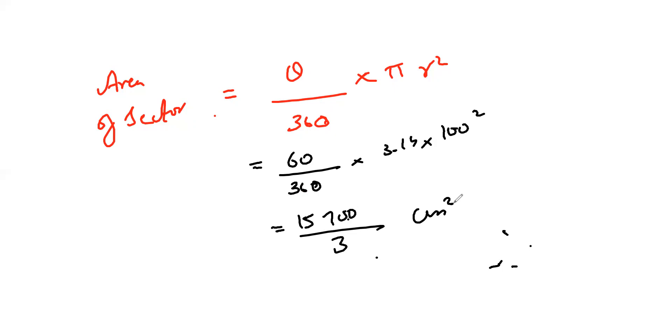And how many sectors are there here? I have three sectors here. Because three circles means three sectors. So area of, this is one sector. So area of three sectors means multiply by 3. 3 into 15700 by 3. So if I do that, I will get 15700 centimeters square.